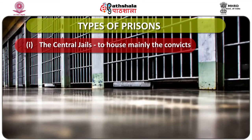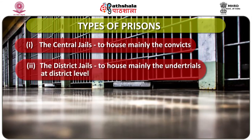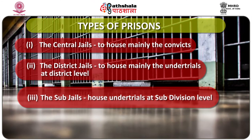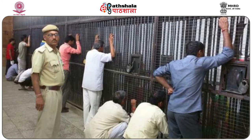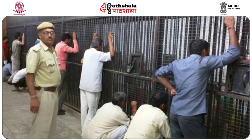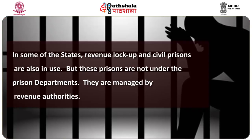The central jails house mainly the convicts. The district jails house mainly the under-trials at the district level, whereas the sub jails house only under-trials at the subdivisional level. However, the distinction between central jails and district jails has almost vanished because under-trials and convicts are now housed together in one jail. In bigger districts, sub jails are at the subdivision level where they mainly have under-trial prisoners. Some states also have revenue lockups and civil prisons, but these are not under the prison department — they are managed by the revenue authorities.